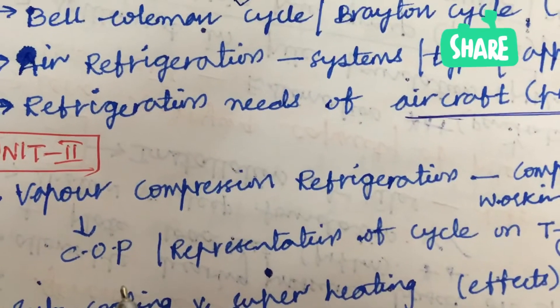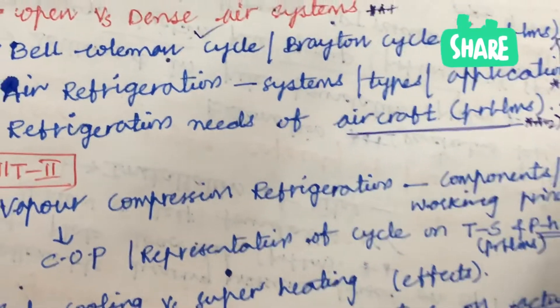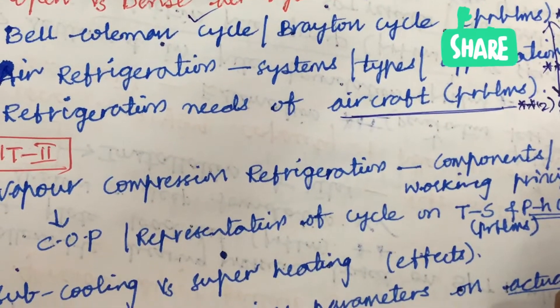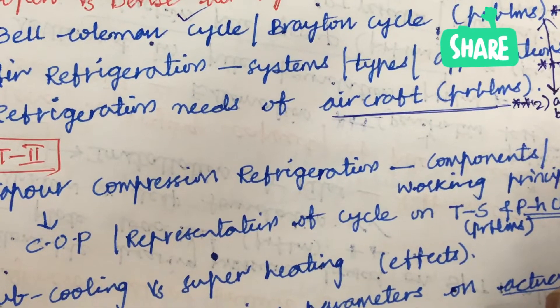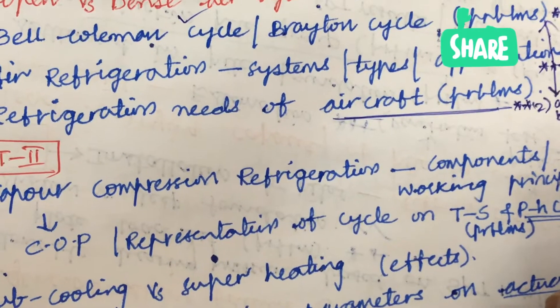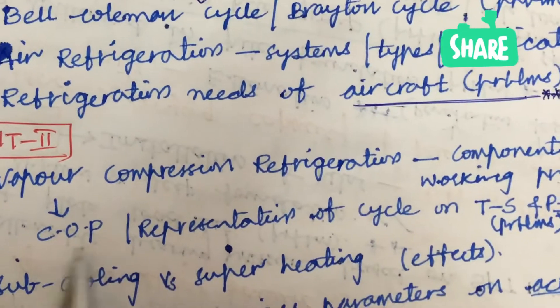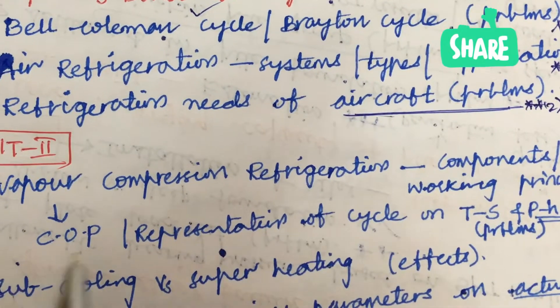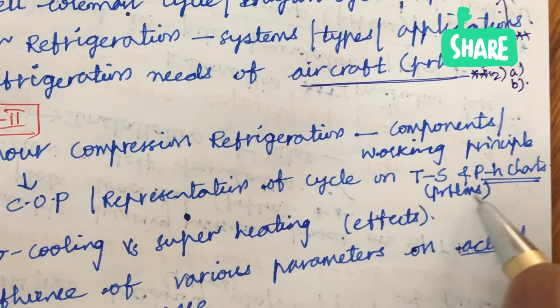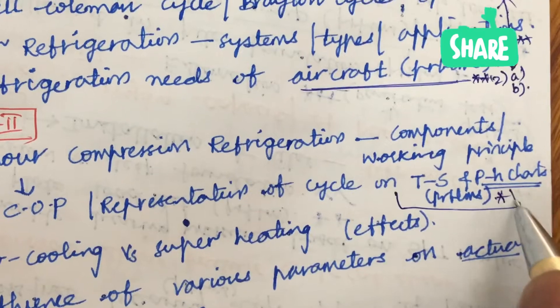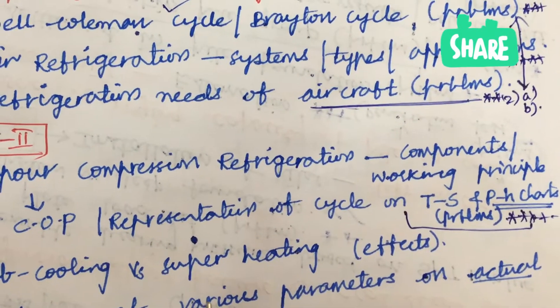Later, the second unit is all about the vapor compression refrigeration and its components and the working principle. If you look at the concepts which I am going to talk about, for each and every concept you are supposed to work out its components and its working principle as well as advantages and applications. Sometimes they will be asking the comparison also. Later, COP of vapor compression refrigeration and related to it a problem, as well as representation of cycle on T-S as well as P-H chart and the problems related to it is one of the gunshot questions. It is very, very important you should know how to read T-S as well as P-H charts.